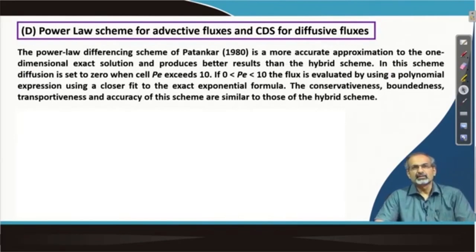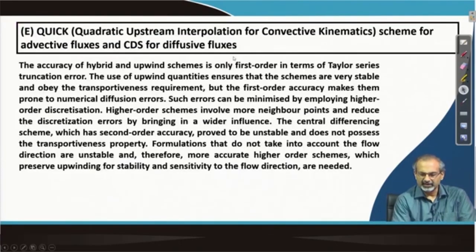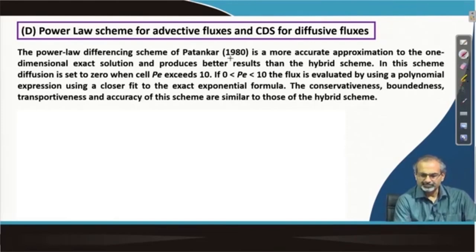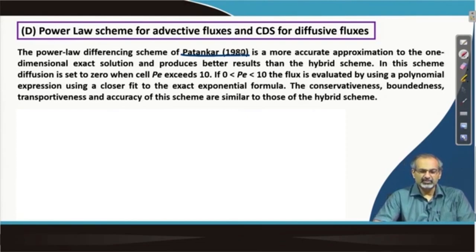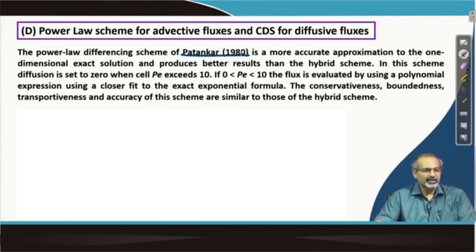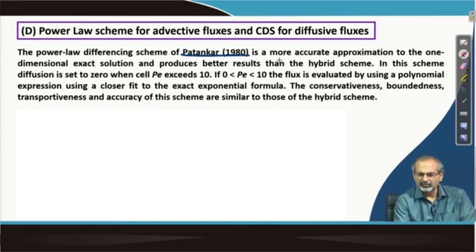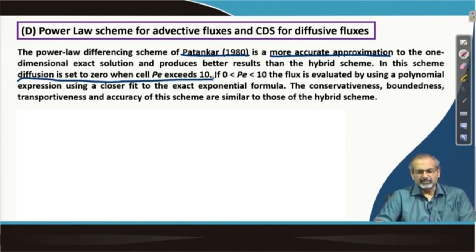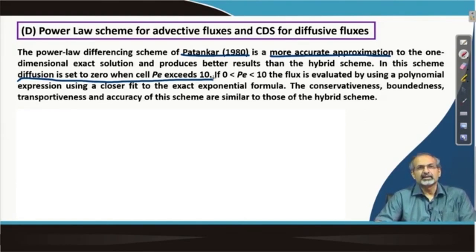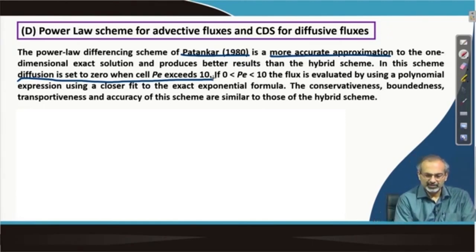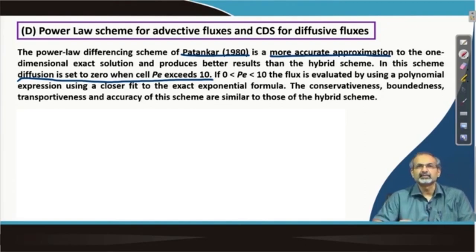The power law scheme, which came a little later in 1980, is a more accurate approximation because it approximates the exponential distribution in the intermediate Peclet number range using a power law rather than a piecewise linear fit. As a consequence, more accurate approximations are expected. Diffusion is set to 0 when the cell Peclet number exceeds 10. Its conservativeness, boundedness, and transportiveness are of similar order to hybrid, but accuracy is strictly higher due to the superior approximation in the intermediate Peclet number range.